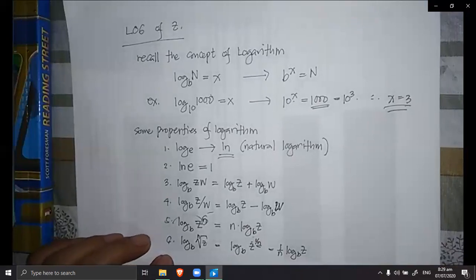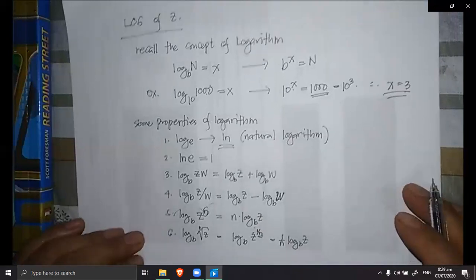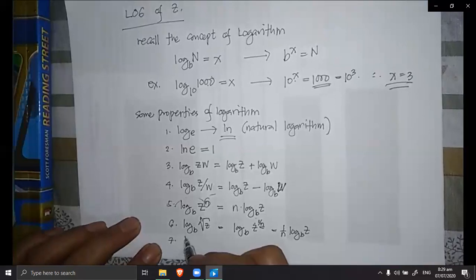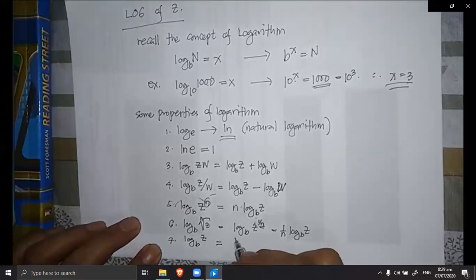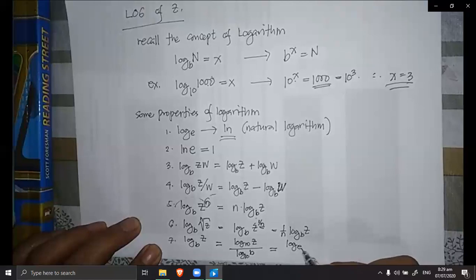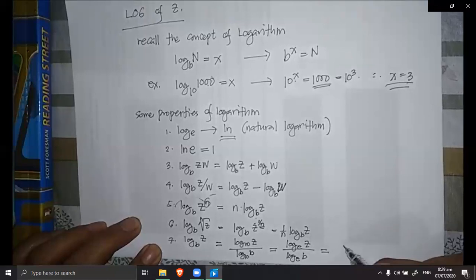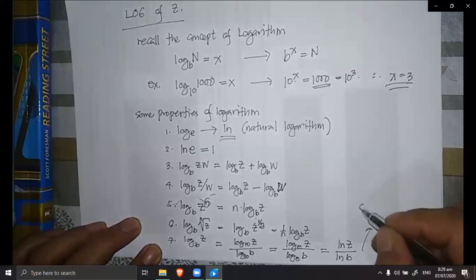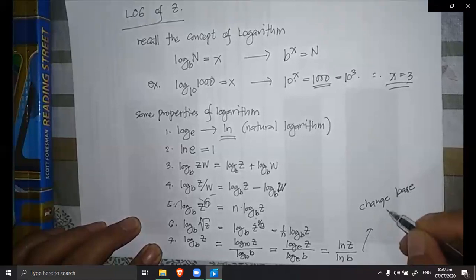The last property is the change of base rule. The logarithm of z to the base of b can be rewritten as log of z to the base of 10 divided by log of b to the base of 10. You can also write it as the natural log of z divided by the natural log of b — that is, ln z over ln b. This is called the change of base rule.